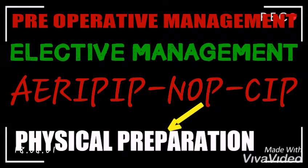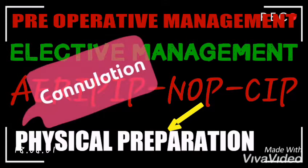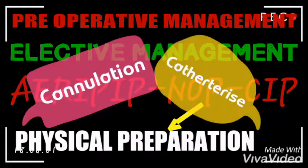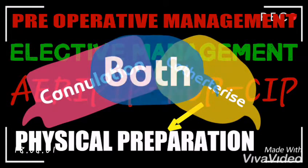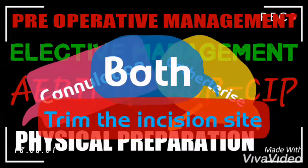The next part is Physical Preparation. Under physical preparation, you need to cannulate the patient, catheterize the patient, bathe the patient, and trim the incision site.